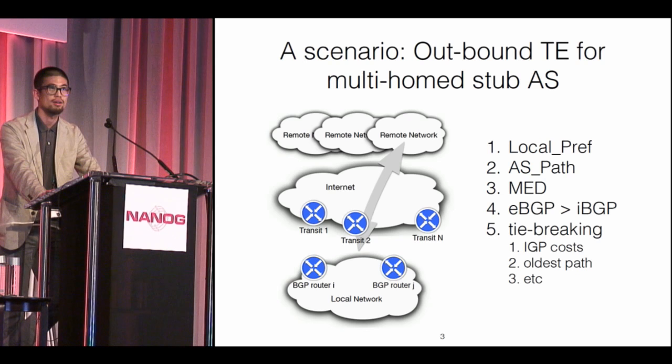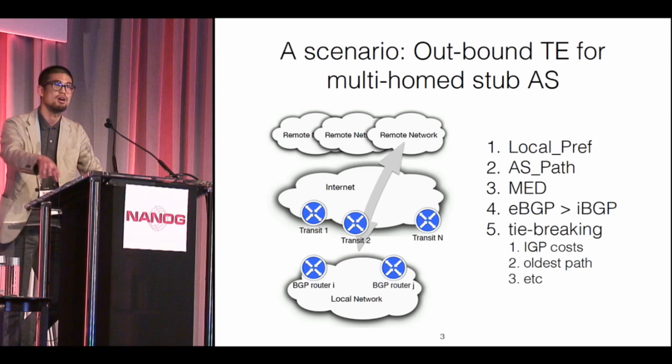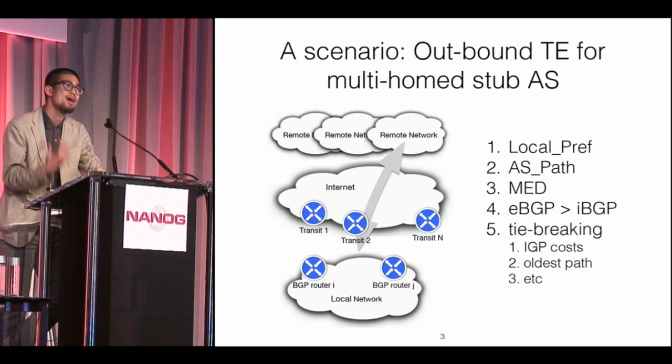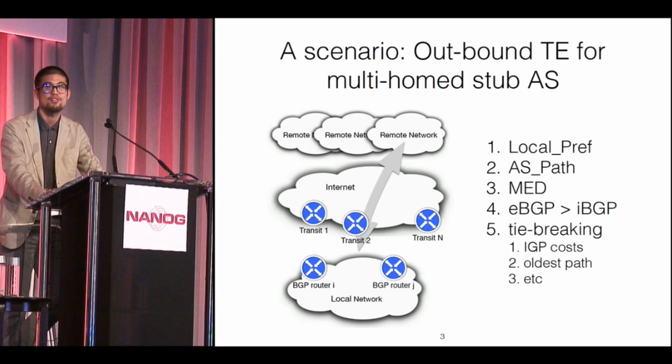BGP is a distance vector routing protocol, and like routing protocols of other flavors like OSPF, it doesn't take into account performance metrics in making decisions. When you are performing traffic engineering within a network, as long as there is no congestion, the delay is quite predictable. But when it comes to the inter-domain context, one actually has to measure to know what the latency of certain AS paths is, because there are so many factors beyond our control.